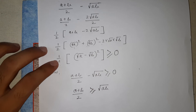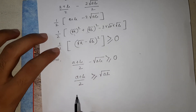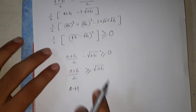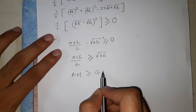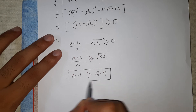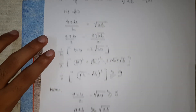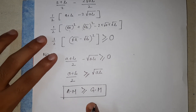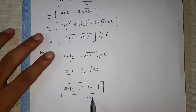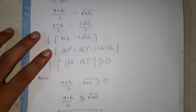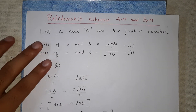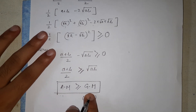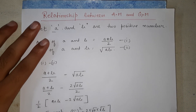(a + b)/2 is nothing but the AM from equation one, and √(ab) is the GM, so AM ≥ GM. This is the relationship between AM and GM: if a and b are positive numbers, then the arithmetic mean is always greater than or equal to the geometric mean. I hope you understood the proof. If you have any doubts, ask in the comments. Thanks for watching!